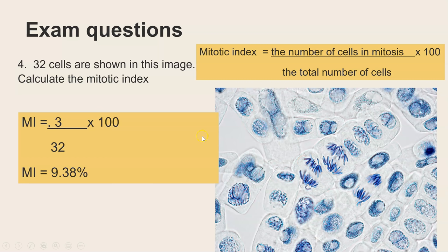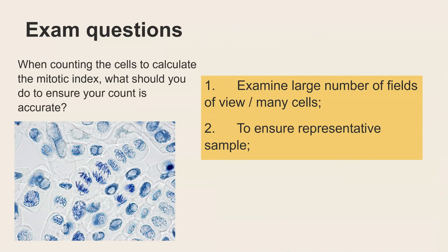So lastly when counting the cells to calculate the mitotic index what should you do to ensure your count is accurate so for this one examine a large number of fields of views or many cells and that is to make sure you have a representative sample so what we mean by that is this here is just looking at a small section of cells it's one field of view which means you're just looking at one section under the microscope what you should really do is count and calculate it for that field of view move your slide over and do the same thing for another field of view and do that at least 10 times and then you can work out what was the average mitotic index and that means it'll be more representative of the entire root tip which is what your sample is so that's kind of linking to sampling skills but it's sampling in terms of recording and counting the cells under the microscope.